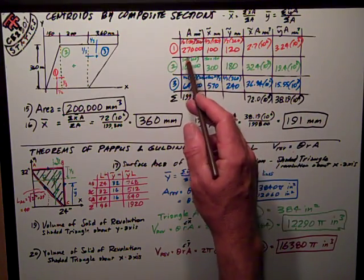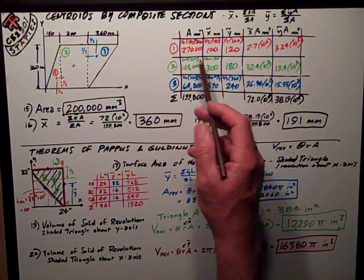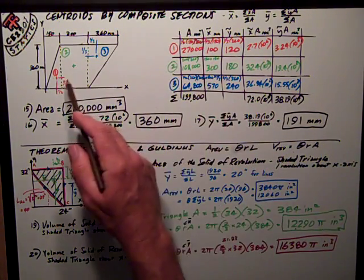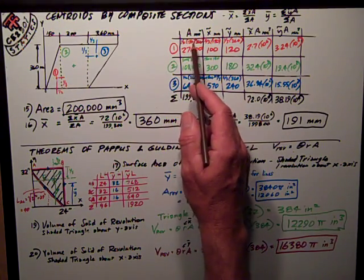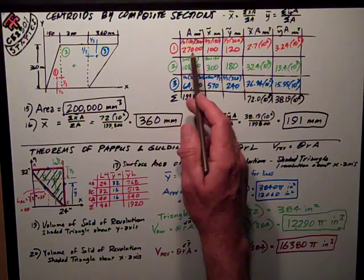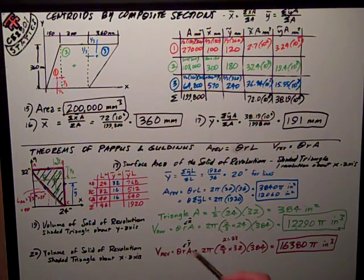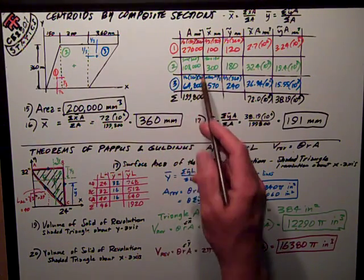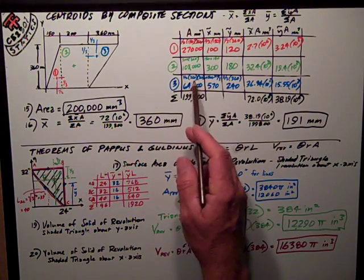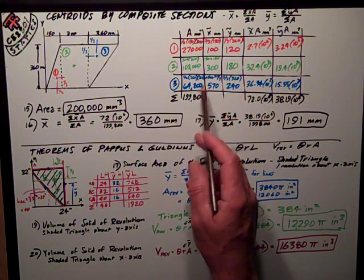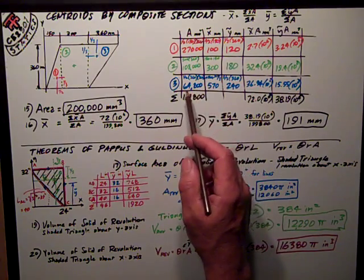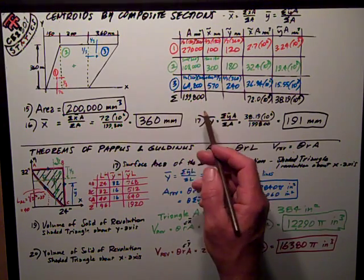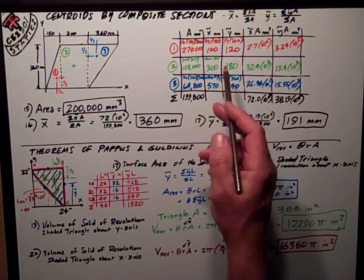So my chart looks like this: my three segments, one, two, and three. My areas, I've written them up here in the box. For the triangle, it's one-half base times height, one-half 150 times 360 for this triangle. Do the math, 27,000. For the rectangle, it's just 300 by 360, 108,000. This triangle is one-half base times height, one-half 360 times 360, 64,800. Sum those up, I get almost 200,000, 199.8.